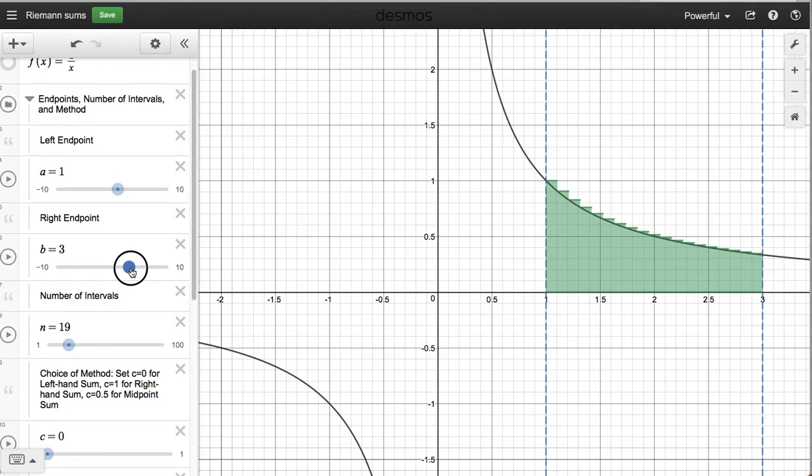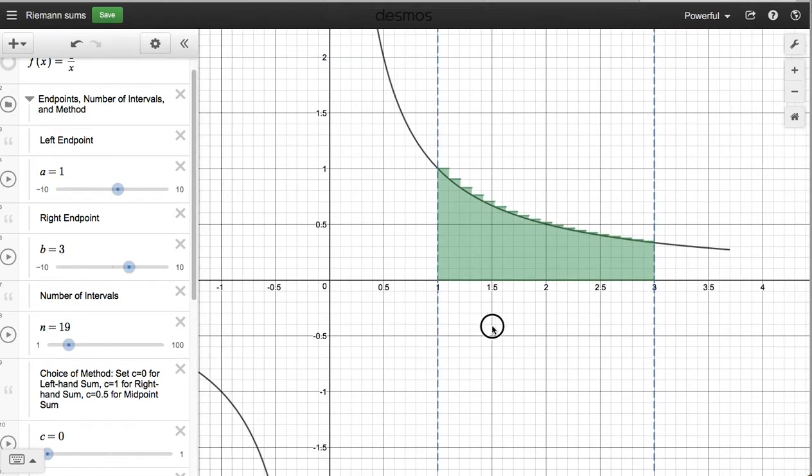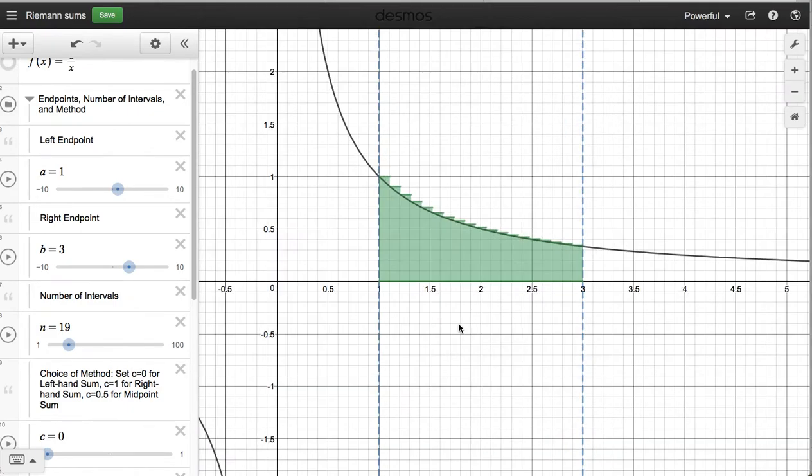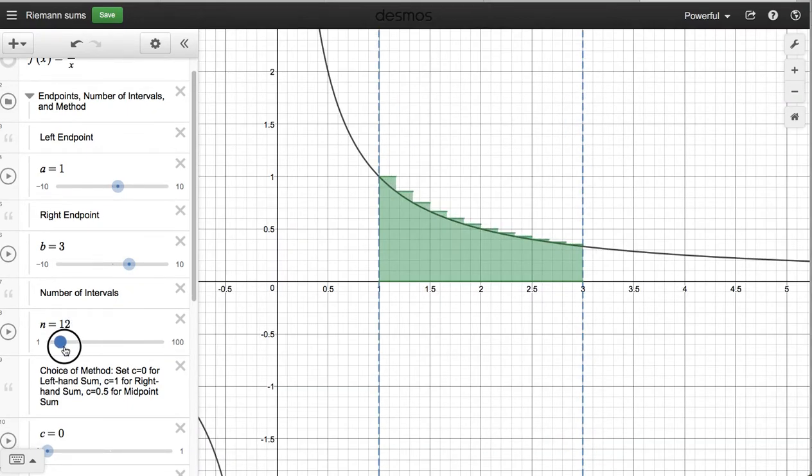And you can see the application automatically updates here. Now, I only need 4 rectangles, so that's way too many. I'm going to slide this back to 4. I'll get it eventually.